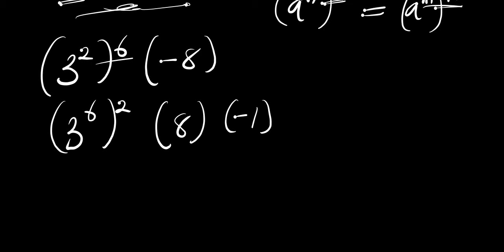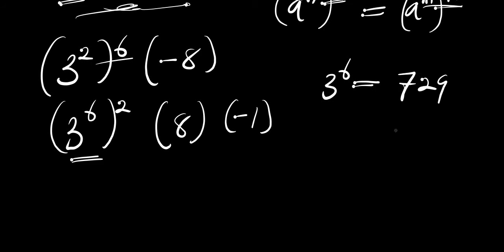The next thing is: what is the value of 3 power 6? 3 power 6 simply means 3 multiplied six times, and the value is 729. So we are going to have 729 raised to the power of 2, times 8, times negative 1.